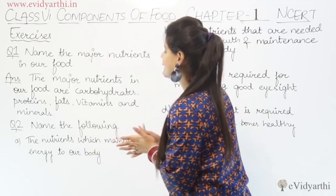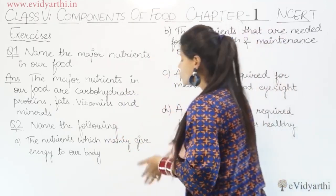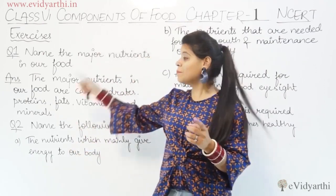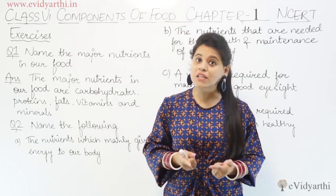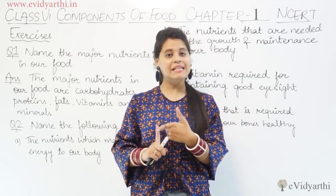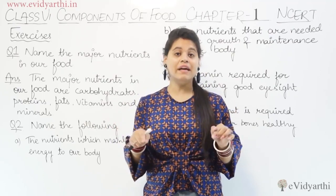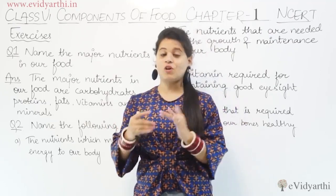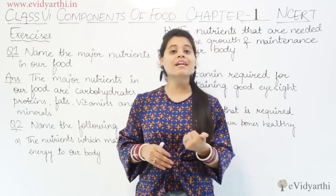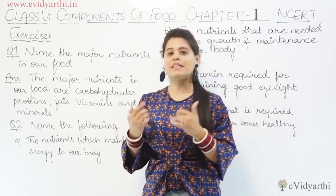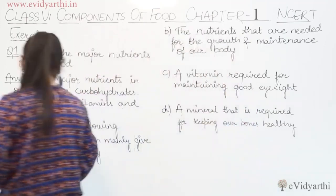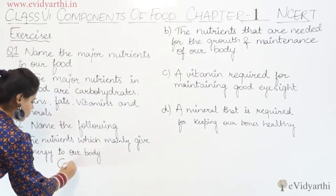The first one is: the nutrients which mainly give energy to our body. In these five nutrients, which ones give energy? When we discussed the first category, that was energy-giving — carbohydrates and fats. Fats are stored energy, but here we will mention carbohydrates because they are instant energy providers. So the answer is carbohydrates.